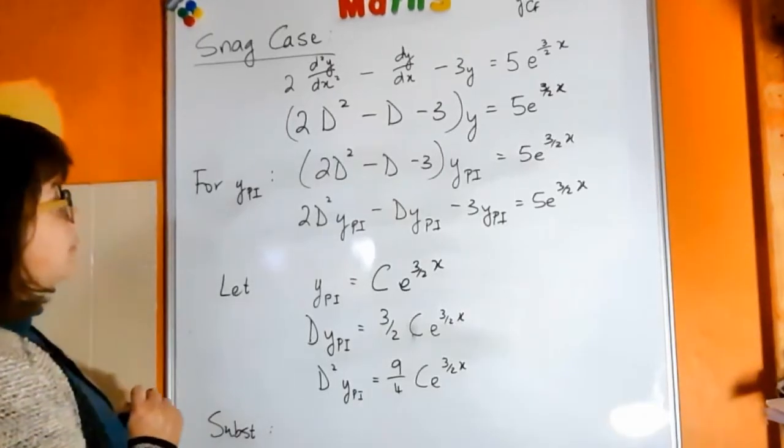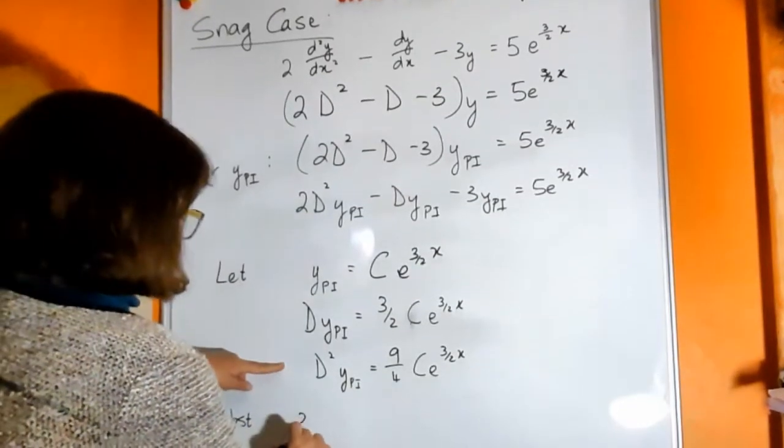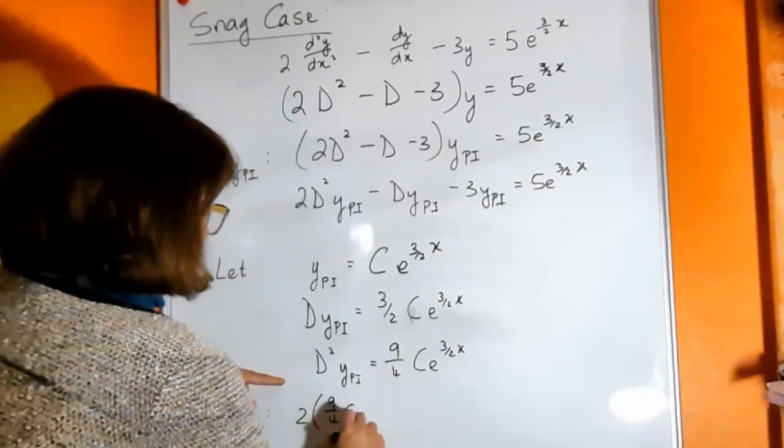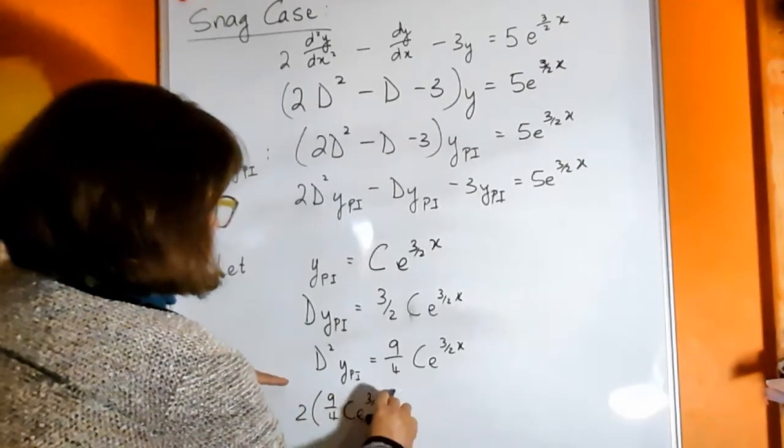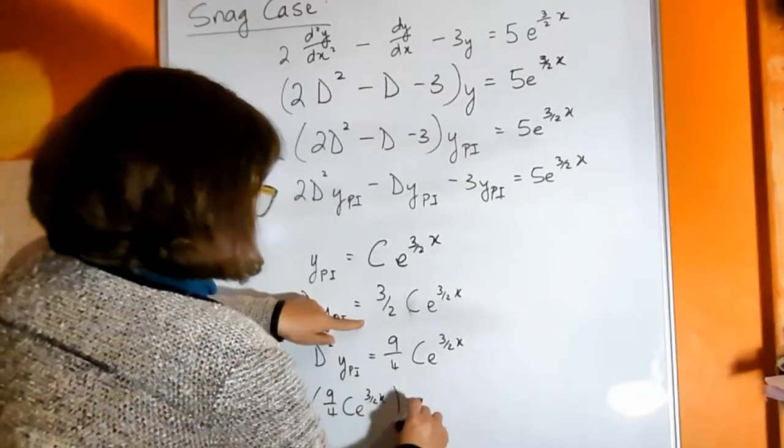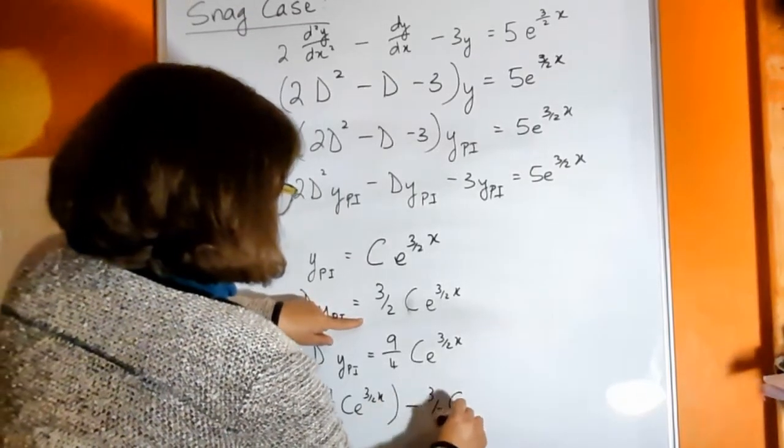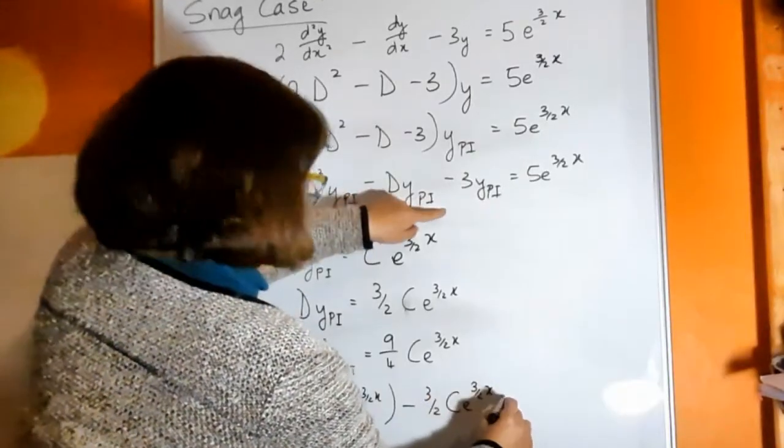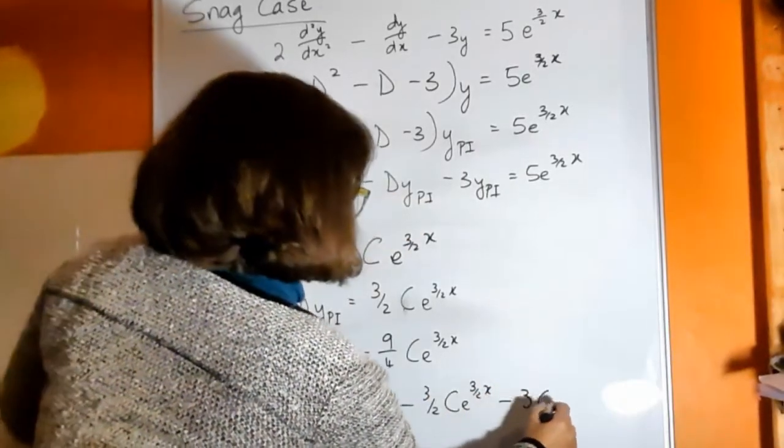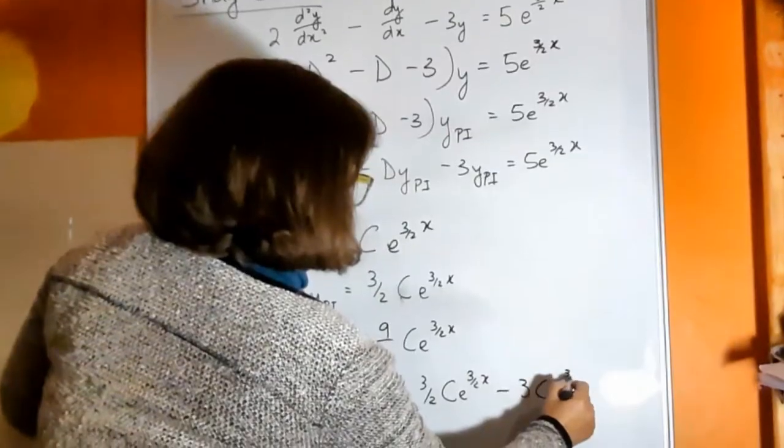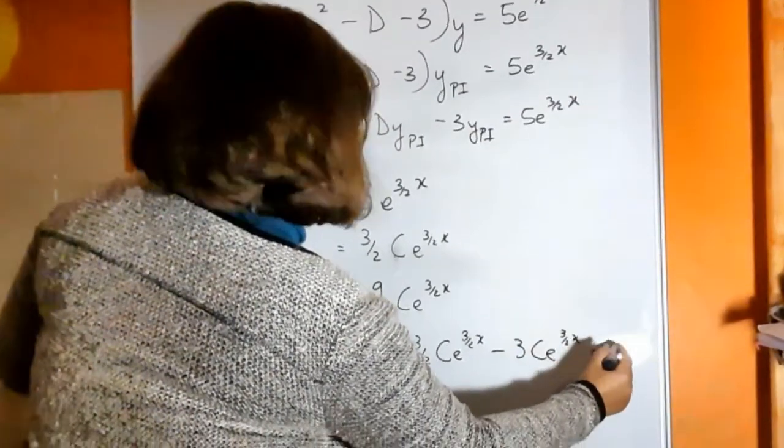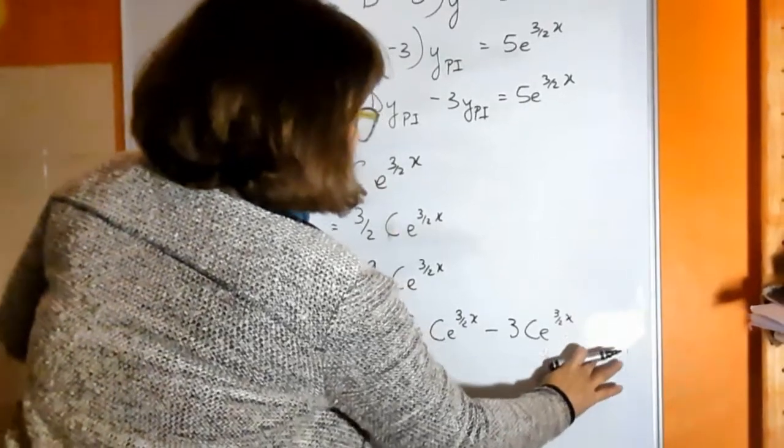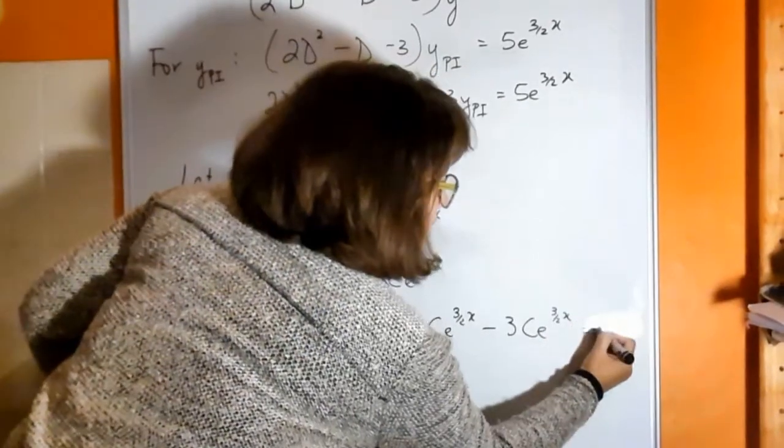And my second derivative is going to be 9 over 4 ce to the 3 over 2x. So when I substitute, I'm going to substitute and we'll get 2 times 9 over 4c minus 3 over 2c minus 3c.